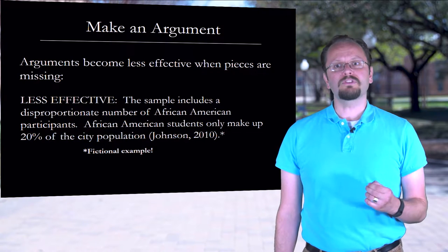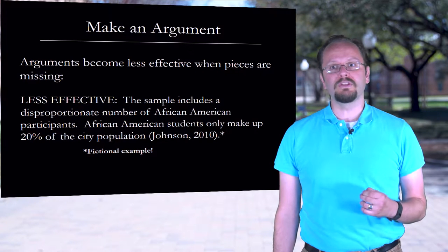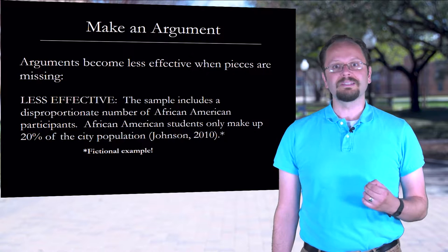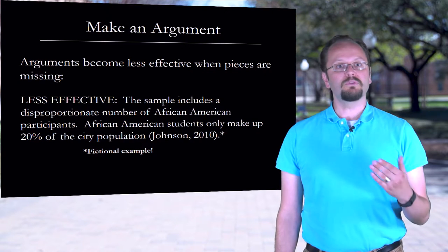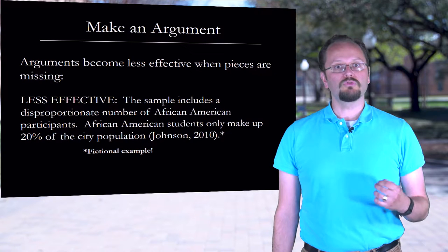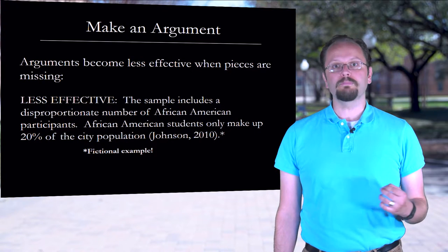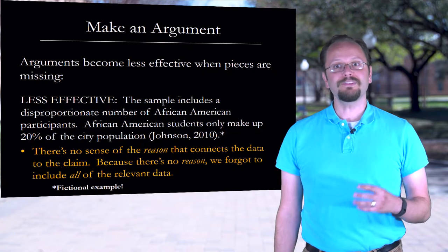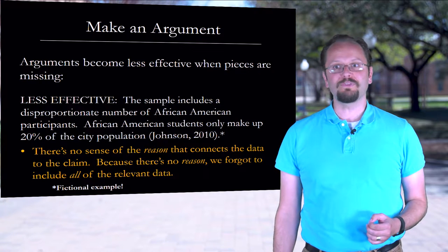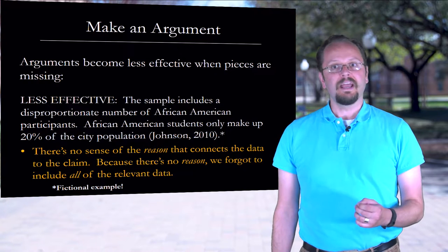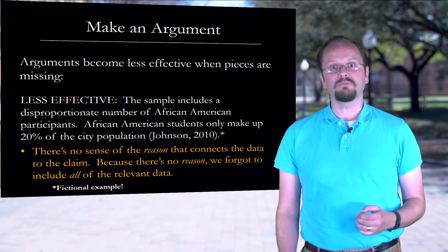When we leave out some of the key elements of argumentation, the argument becomes less effective. Here's an example of a less effective argument: 'The sample includes a disproportionate number of African American participants. African American students only make up 20% of the population.' This example is less effective because we offered no reason to connect the claim with the data, and therefore we forgot to include all of the data.